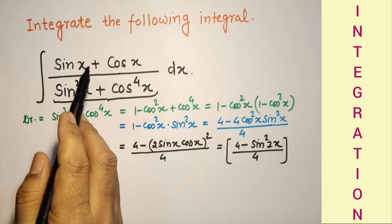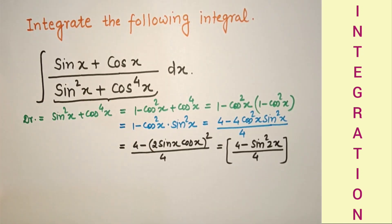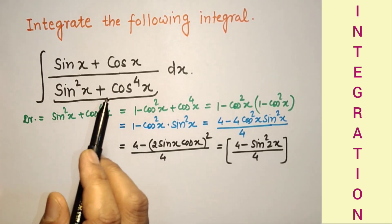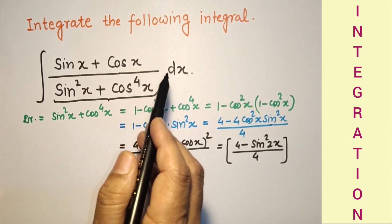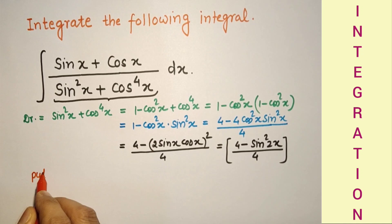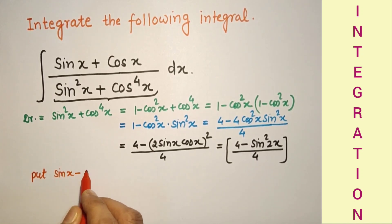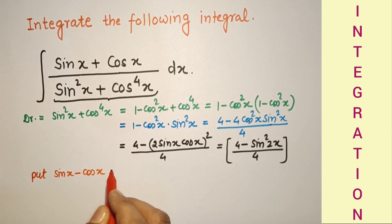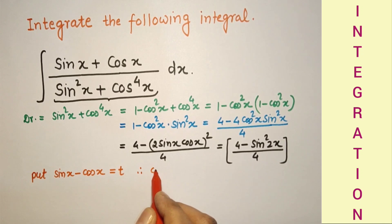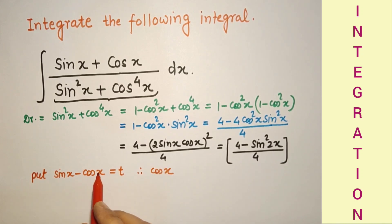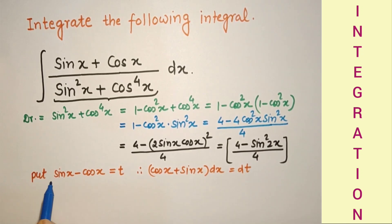Now, sin x + cos x is the derivative of sin x − cos x. So we put sin x − cos x = t, then (sin x + cos x) dx = dt. Differentiating: d(sin x) = cos x and d(−cos x) = +sin x, giving us dt.